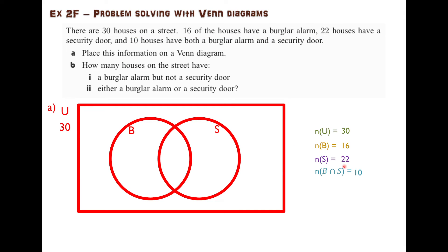Okay, now we can start putting numbers in. There are 30 houses in total, so I can put a 30 there. The intersection is 10, so I can put a 10 there. To find out how many are in this section that have a burglar alarm but no security door...